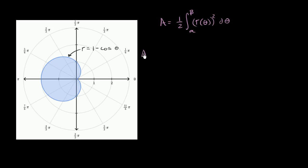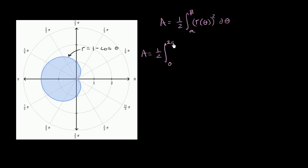In this case, the area is going to be equal to one half the definite integral. Now what's our alpha and what's our beta? Well, we're going from θ = 0 radians — when θ = 0, this is 1 − 1, we're right over here — all the way around to θ = 2π radians. Notice when we're back at 2π, cos(2π) = 1, so 1 − 1 = 0 again, and we get back to that point. So we're going from θ = 0 to θ = 2π.